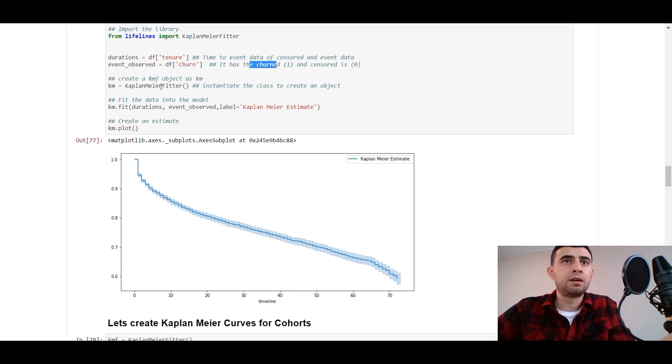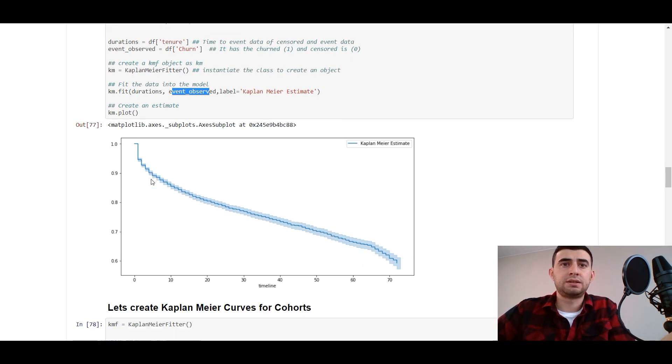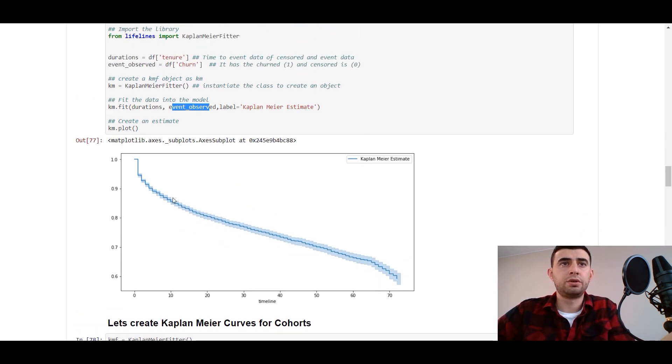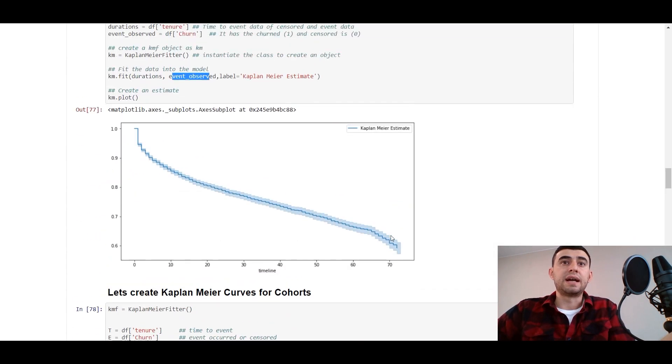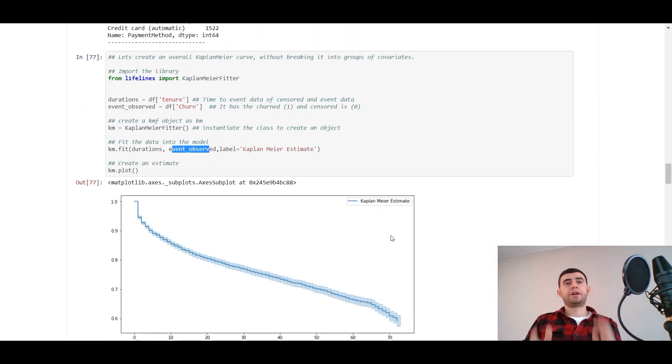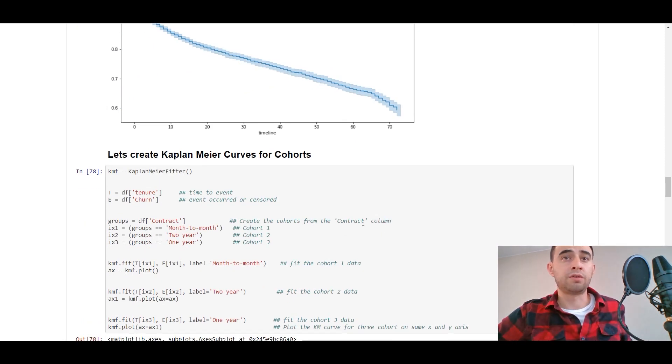The tenure column is the time to event data or censored data, and the label is churn which has churn one or zero, survived or not. We create a fitter, Kaplan-Meier fitter, fit the data into the model with durations and event observed, create an estimate, plot it, and here it is. We see the overall survival curve.